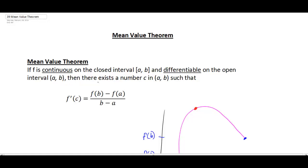What this states is there is going to exist a number c in the interval from a to b such that the derivative evaluated at c is equal to f of b minus f of a, divided by b minus a. Now f of b minus f of a over b minus a should look familiar — this is simply your slope formula if you're given two points: y₂ minus y₁ over x₂ minus x₁.